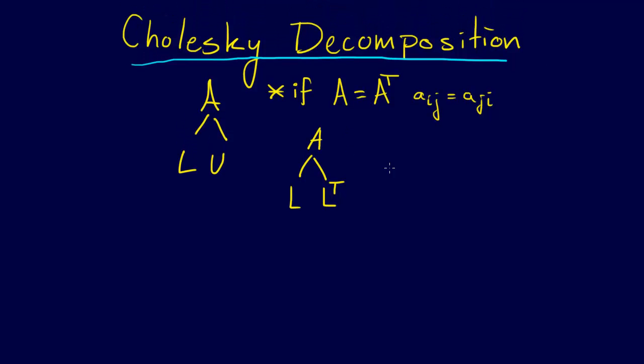So in Cholesky decomposition, we just say that A equals L, L transpose. And then we can write out the equations for that. A_11 equals L, it would be L_11 squared, I believe. So we can write out all the other terms there.